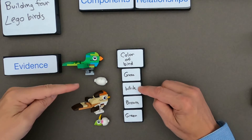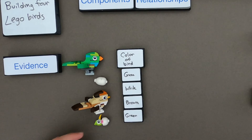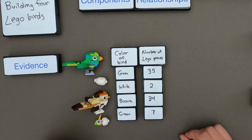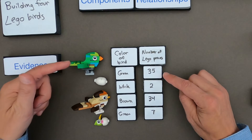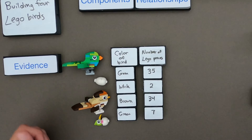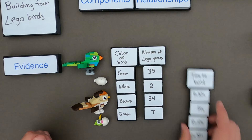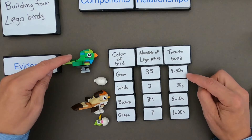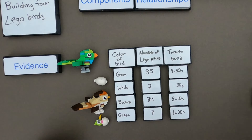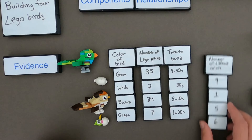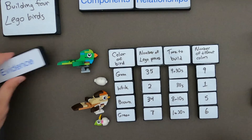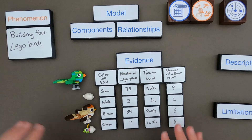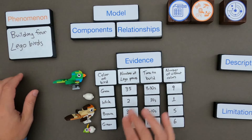Let me bring that data table out. The first thing I kept track of is the color of the bird — the green bird, the white bird, the brown bird, and the small green bird. Next I kept track of the number of LEGO pieces: the one with the most pieces is the green bird and the least is the little egg. I also kept track of the time to build, and then the number of different colors in the LEGO model itself. So this is the evidence — we've got the phenomena and we've got the evidence.